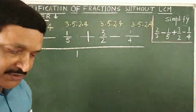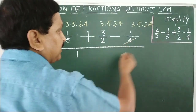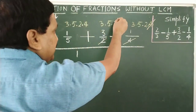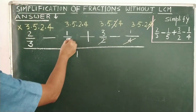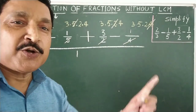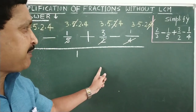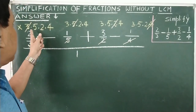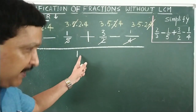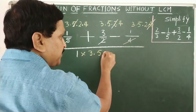Now just try to cancel. This 4 will be cancelled by this 4, this 2 will be cancelled by this 2, this 5 will be cancelled by this 5, and this 3 will be cancelled by this 3. Know it carefully: by writing 1 in the denominator and multiplying 3, 5, 2, 4 at all four places, the 1 is also a place, so never forget to multiply that term with 3, 5, 2, 4 as well.